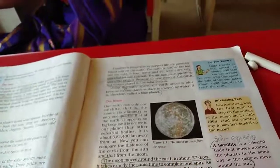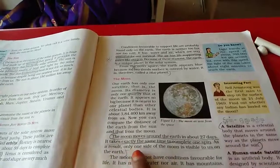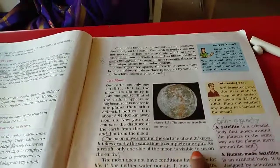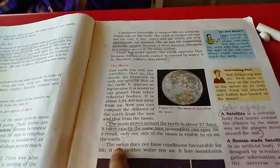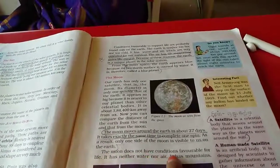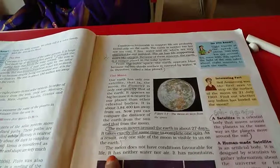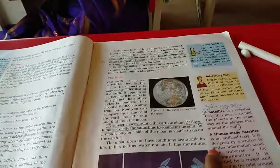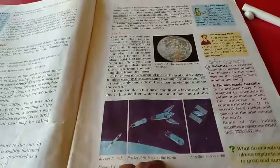As a result, only one side of the moon is visible to us on the earth. The moon does not have condition favorable for life. It has neither water nor air. It has mountains. It has mountains too.